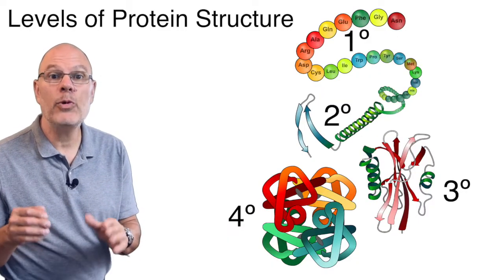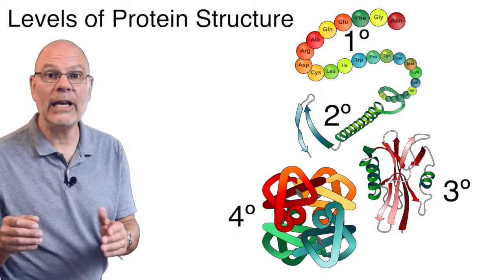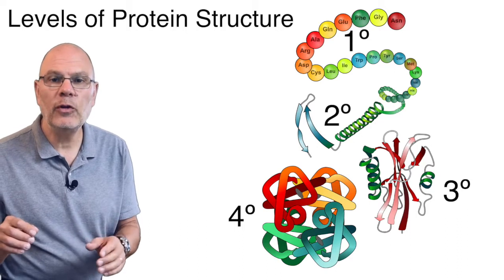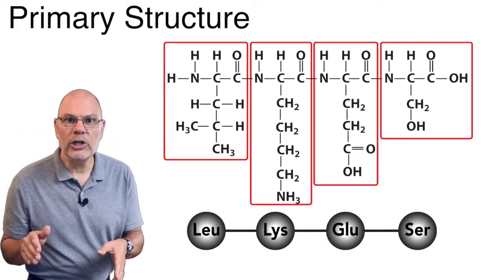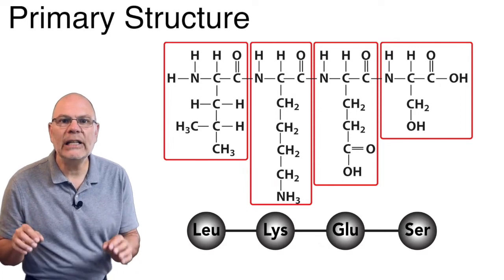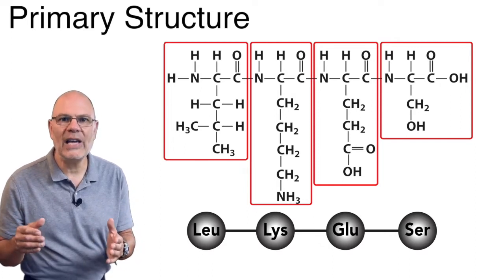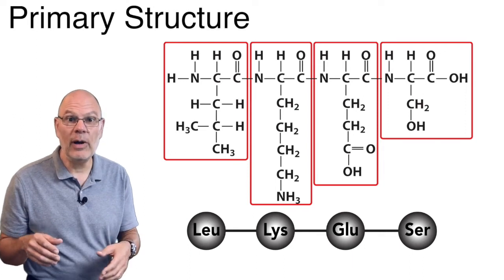Protein structure comes about through three or four levels of molecular interactions. These are referred to as levels of structure. The first level is primary structure. It's the genetically determined sequence of amino acids in a polypeptide chain. In this diagram,